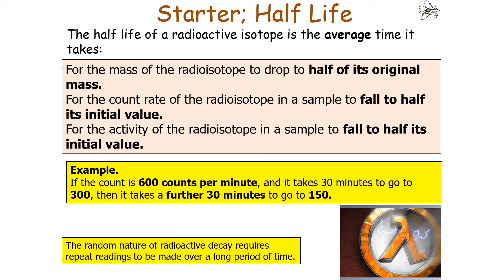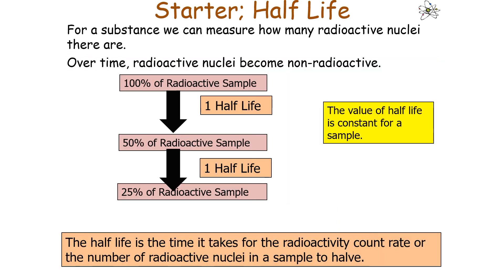The random nature of radioactive decay requires repeated readings to be made over a long period of time. Over time, radioactive nuclei will become non-radioactive: in one half-life, 100% of a radioactive sample drops to 50%, and in another half-life, 50% falls to 25%. The value of half-life is constant for a sample.